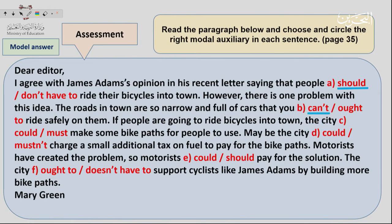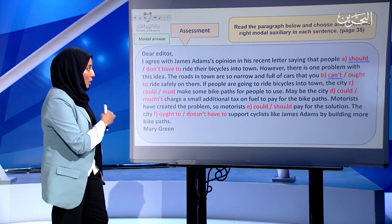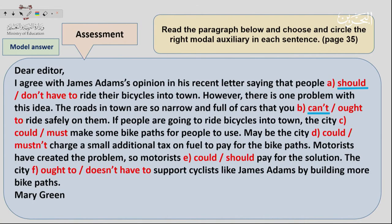Second: 'can't' — 'The roads in town are so narrow and full of cars that you can't ride safely on them.' I chose 'can't' because the roads are so narrow and full of cars — you read the whole context and based on that choose the correct auxiliary verb. Similarly: 'could' — 'The city could make some bike paths for people to use.'